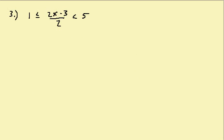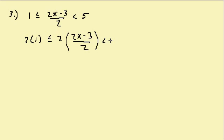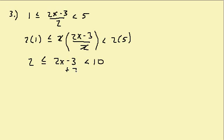Now let's look at an example with a fraction. I want to get rid of the fraction, so I'm going to multiply everything by two. We get two times one less than or equal to two times (2x minus 3)/2 less than two times five. The twos cancel, giving us two less than or equal to 2x minus three less than ten. Then I add three to all three parts, getting five less than or equal to 2x less than thirteen.